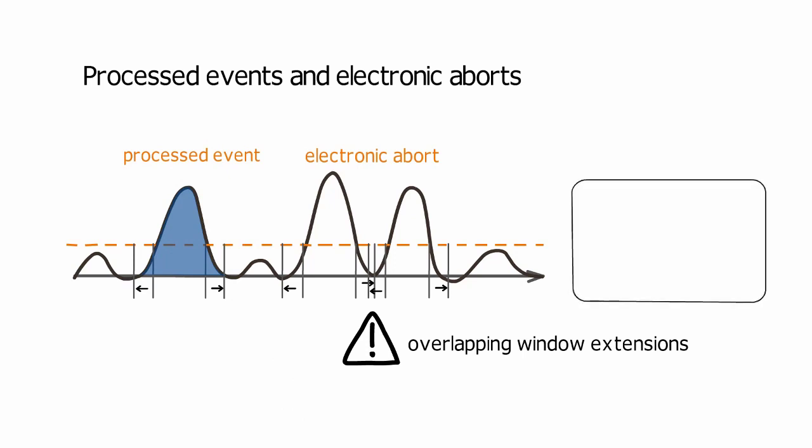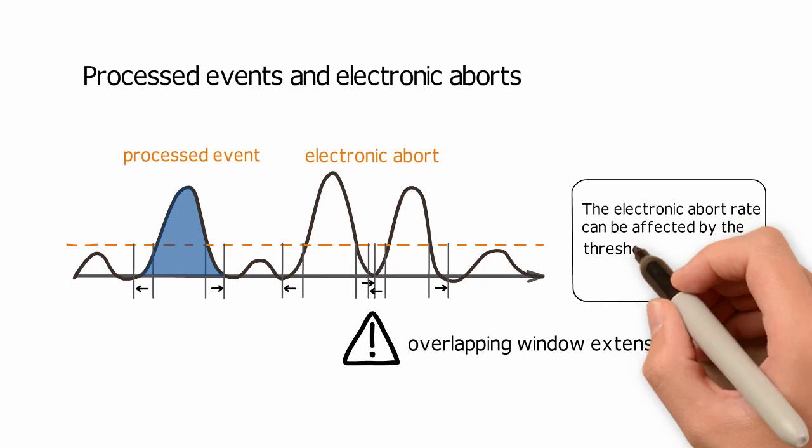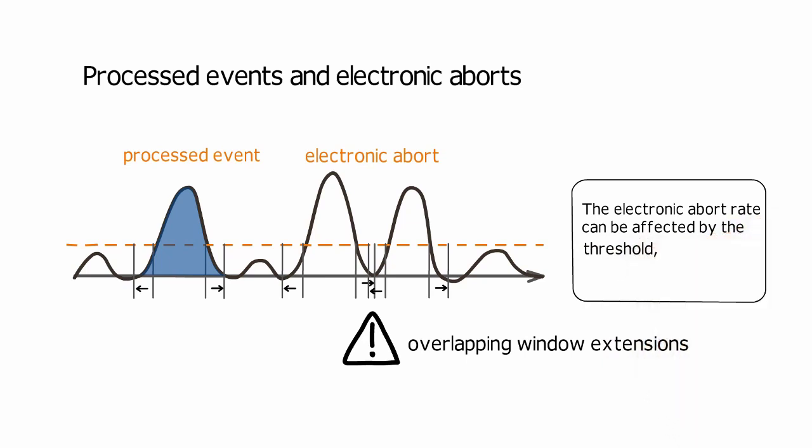One reason you might see a high electronic abort rate is a low threshold setting, which might allow the system to count debris as events. A high electronic abort rate could also be due to a high event rate, which can be controlled either by adjusting the flow rate on the instrument or the cell concentration of the sample.